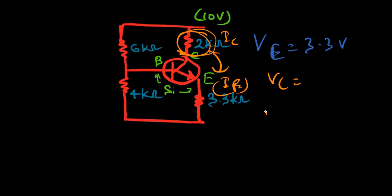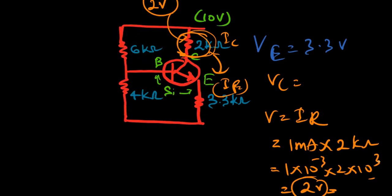We know the current through it is IC, so we can apply V equals IR. I is 1 milliampere times 2 kilo ohms, so 1 times 10 to the power minus 3 times 2 times 10 to the power 3, which equals 2 volts. These 2 kilo ohms will keep 2 volts, so the potential at C has to be 10 minus 2, that is 8 volts.